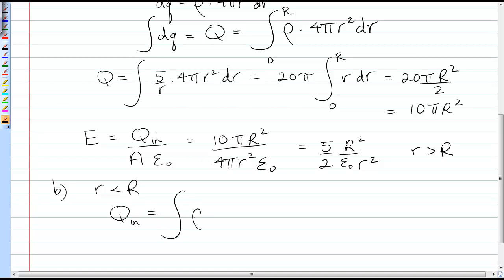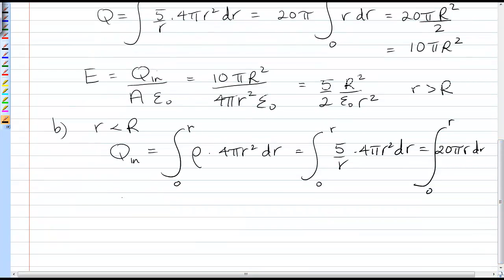So q_in would be the integral of ρ times 4πr²dr. But now our limits of integration are the Gaussian surface, from 0 to small r, not the edge of the sphere. Substituting in for ρ, 5/r, we still have 4πr²dr. We end up doing the integral of 20πr dr, but now from 0 to small r, not capital R. So q_in becomes 20π times r²/2, or 10πr².